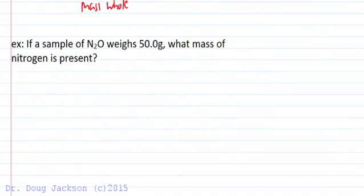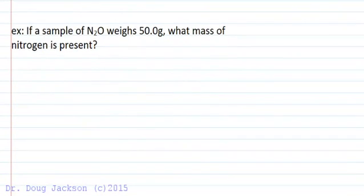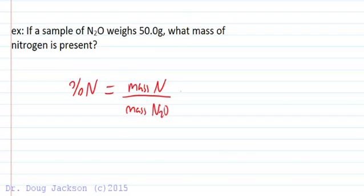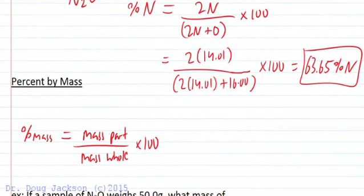If we look at an example of a percentage of atomic nitrogen within a larger compound, we would say percent nitrogen is going to be the mass of nitrogen over the whole, which will be the mass of N2O times 100. And we just calculated the percent nitrogen within N2O is 63.65%, and we did that here.